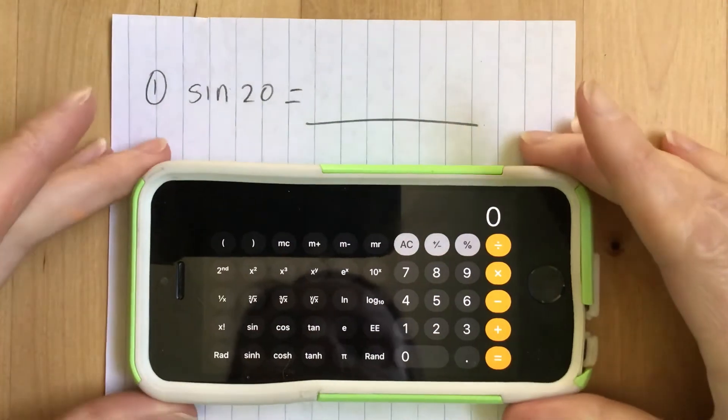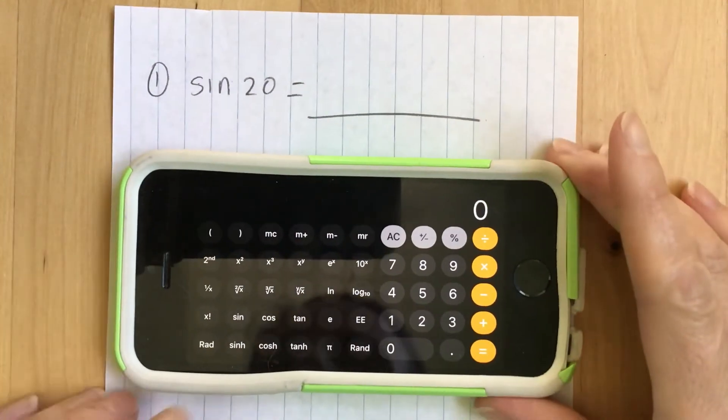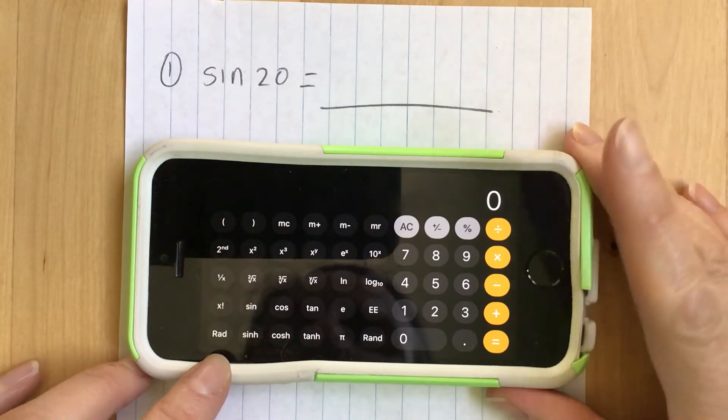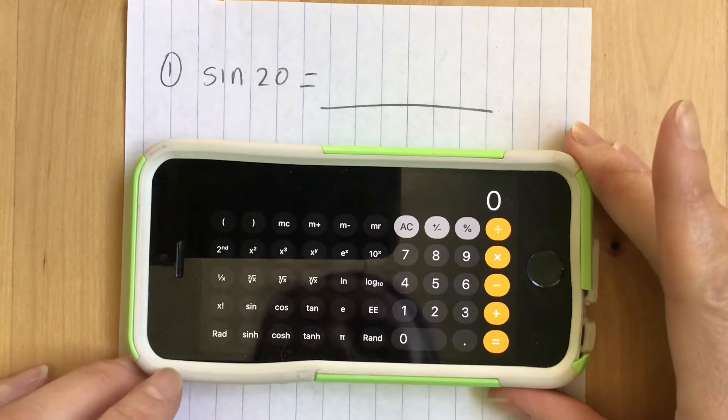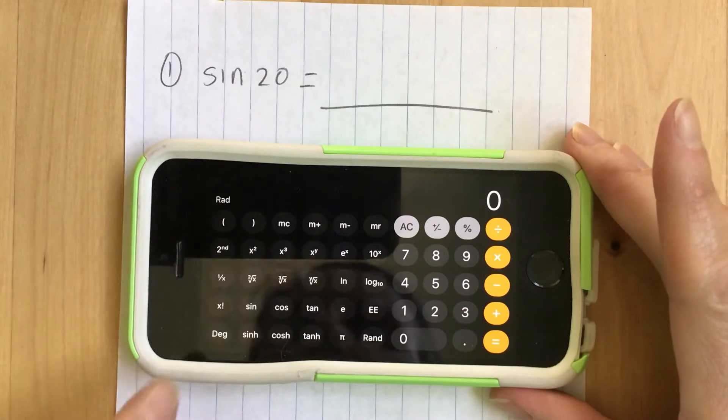Here I have it in scientific calculator mode and over down here in the lower left hand corner it says RAD. This means radians and you don't want radians. Right now if I touch this it changes everything into radians. See how it says RAD now up there. We don't want that.